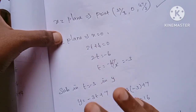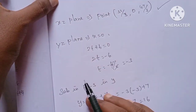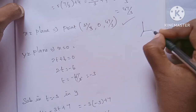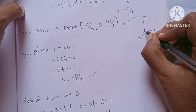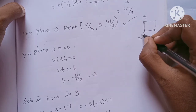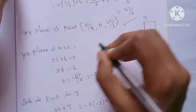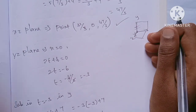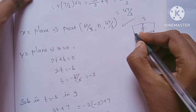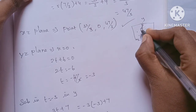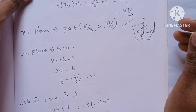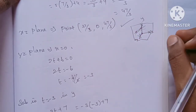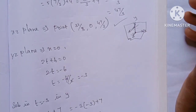So the YZ plane intersection point is (0, 16, minus 11). This is simple: if you have the XZ plane, y is equal to 0; if you have the YZ plane, x is equal to 0. That's why for XZ we set y equal to 0, and for YZ we set x equal to 0. Thank you.